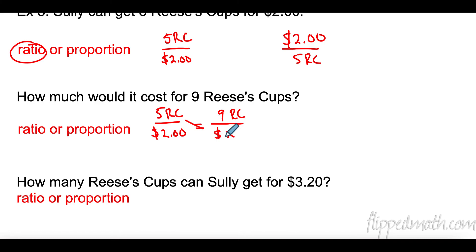So, five Reese's cups over $2 is the same as how many Reese's cups for some dollars. We don't know. We know we have nine Reese's cups. So, we're going to cross multiply. Five times one is five. Five X. Excuse me. Two times nine is 18. Then, we're going to divide both sides by five. And we're going to find out that for nine Reese's cups, it would cost us $3.60.